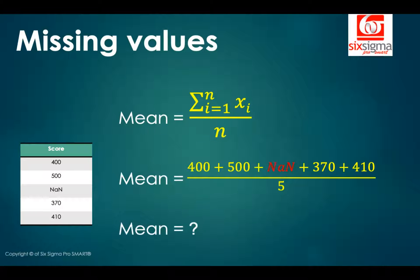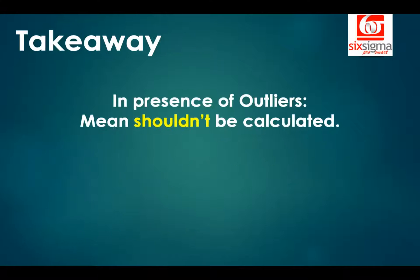What will be the mean? Well, actually, you can't calculate the mean because you have a missing value. We are calling it NAN, which is not a number, or it can be just an NA or just a blank cell. It is not a value that's present. So you can't proceed with mean calculation in the absence of the values that are to be accounted for. You can calculate the mean excluding the value which is missing, but then you are discarding your record, which is not advisable. So an important takeaway, in the presence of outliers, mean shouldn't be calculated.